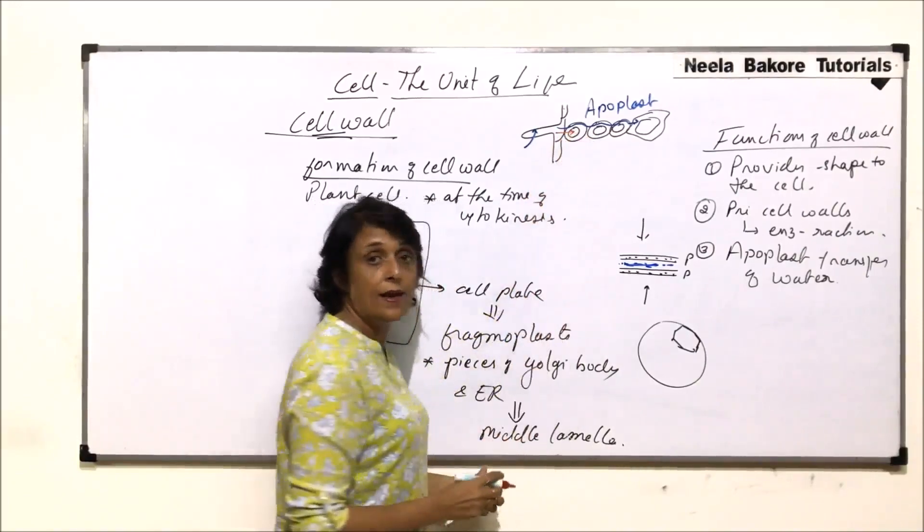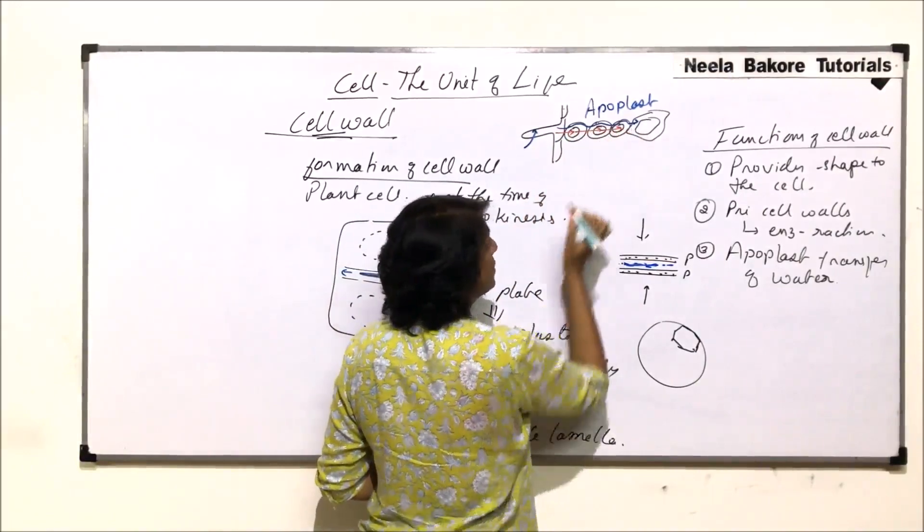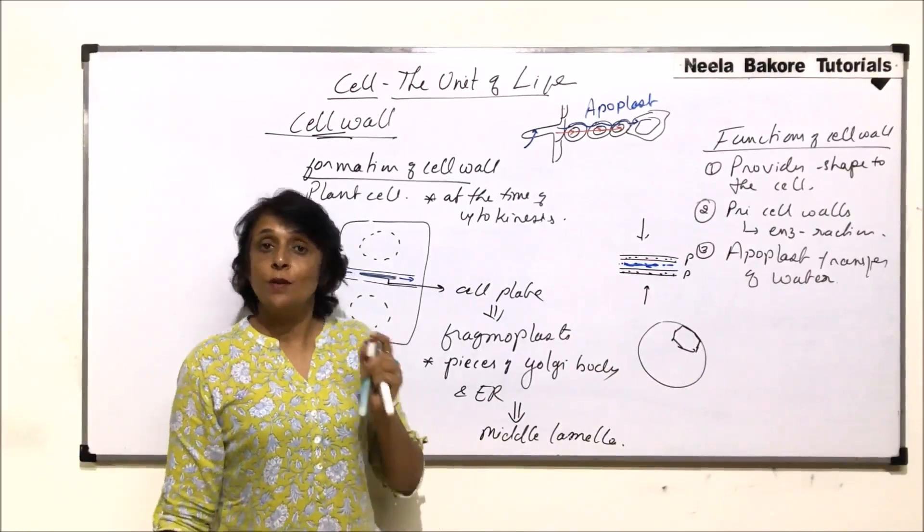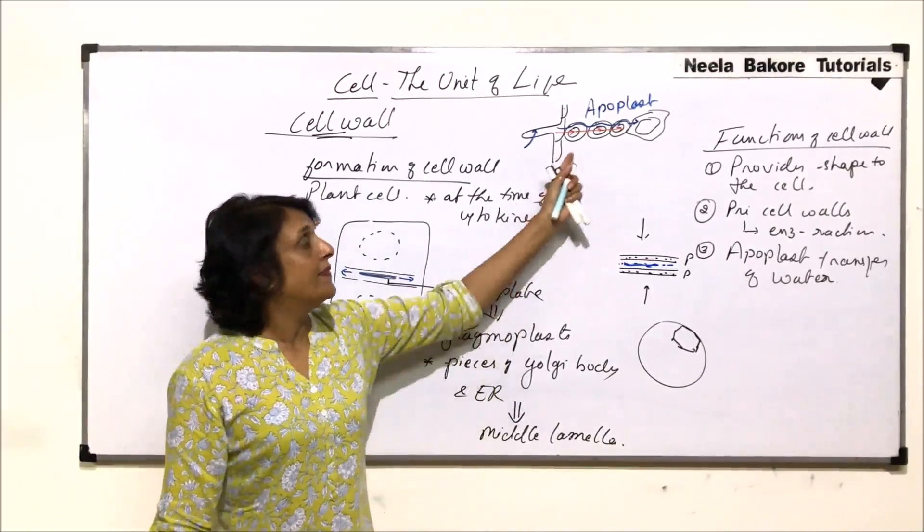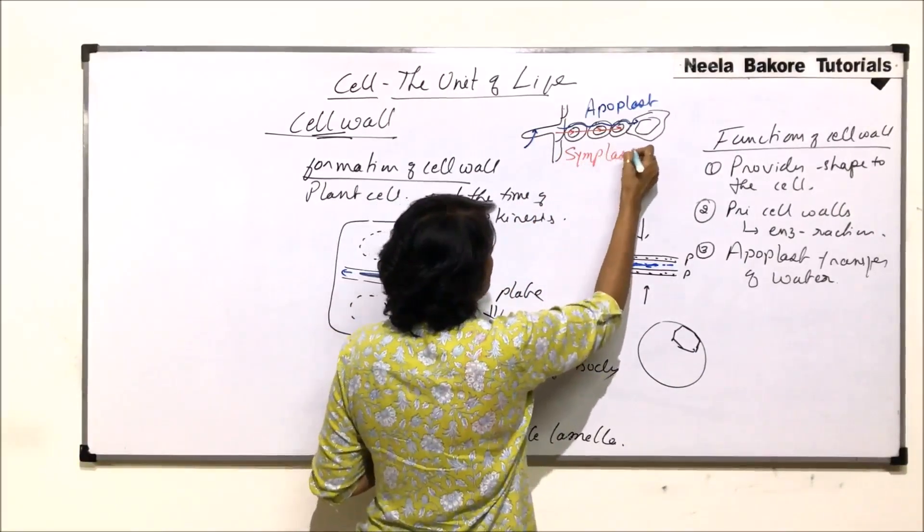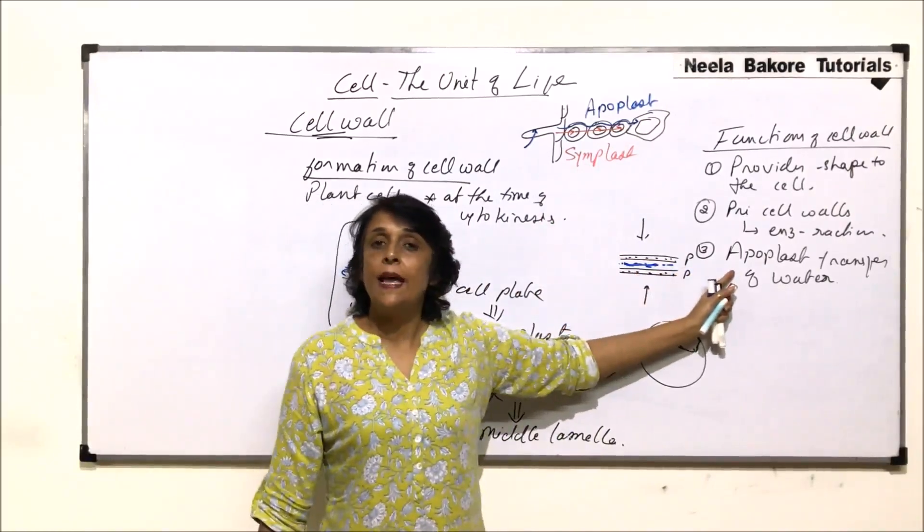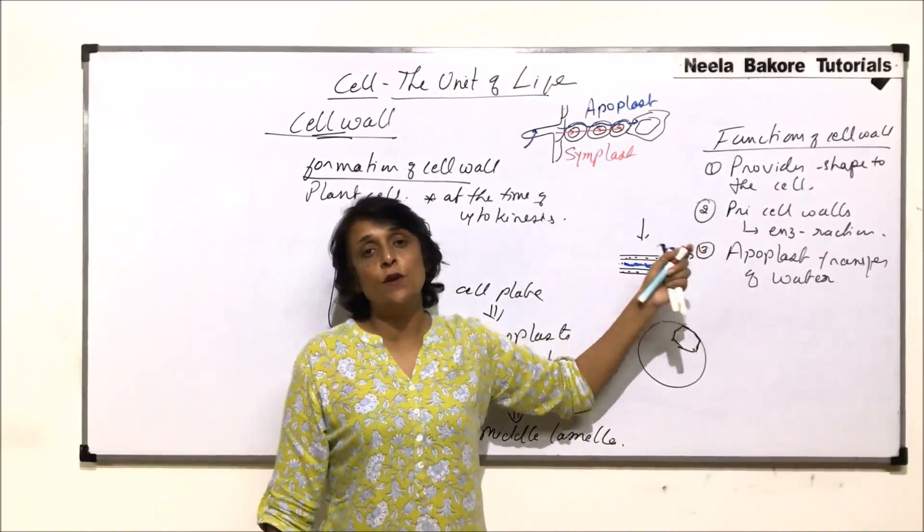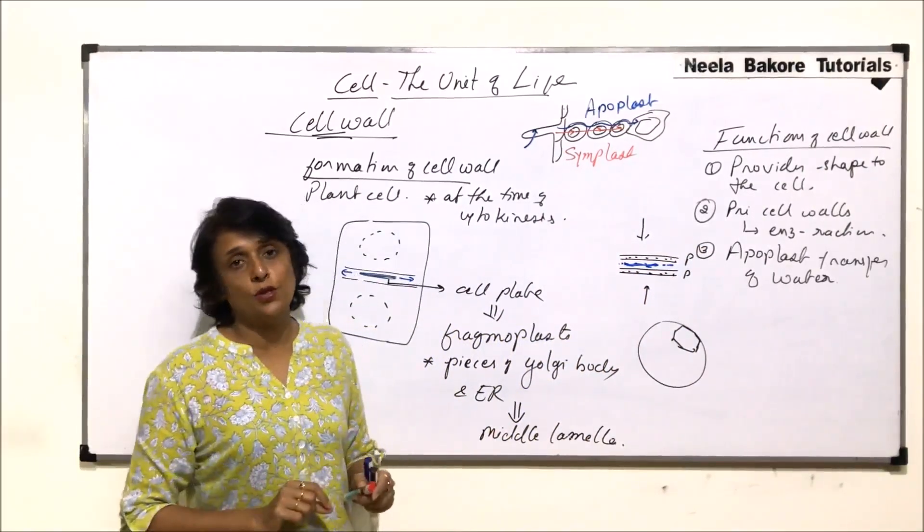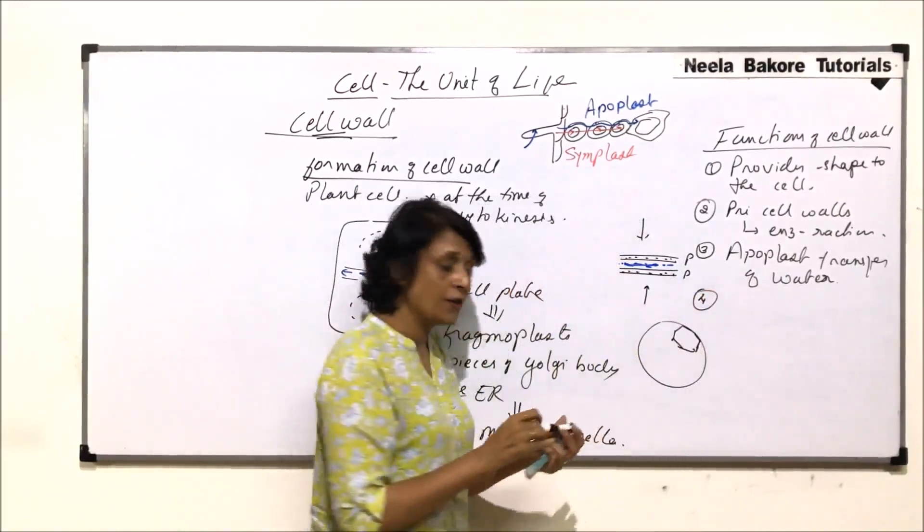We have not drawn endodermis and all because we are focusing only on the cell wall part. So this type of movement is known as apoplast when water goes only through cell wall without entering into the cell. The other possible option is that water goes into the cell through plasmodesmata, then from this cell to the other, from here to here. That means water is going inside the cell, it is crossing plasma membrane. This type of transport is known as symplast.